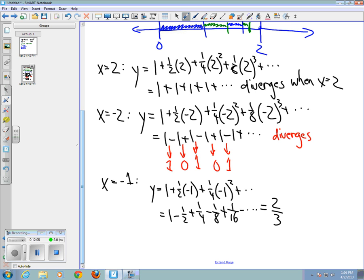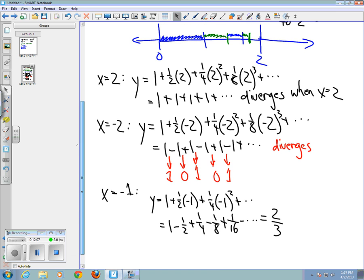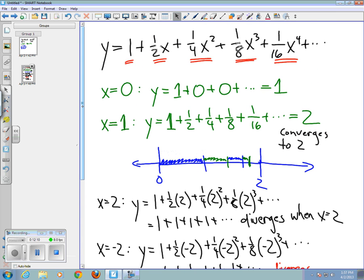So what we've found, if we look back at everything we've done here, if we consider this infinite polynomial y equals one plus one-half x plus one-fourth x squared and so on, it appears that we can get a value of y if x is zero or one or negative one. We can't get values when x is two or negative two. Now of course there can be values other than just whole numbers or integers.